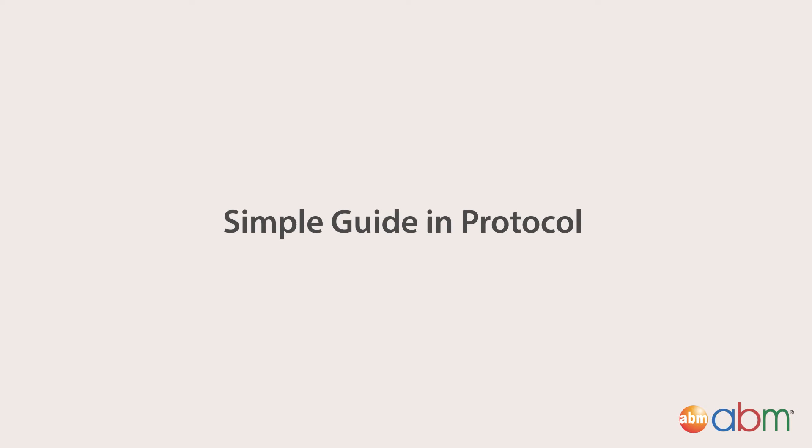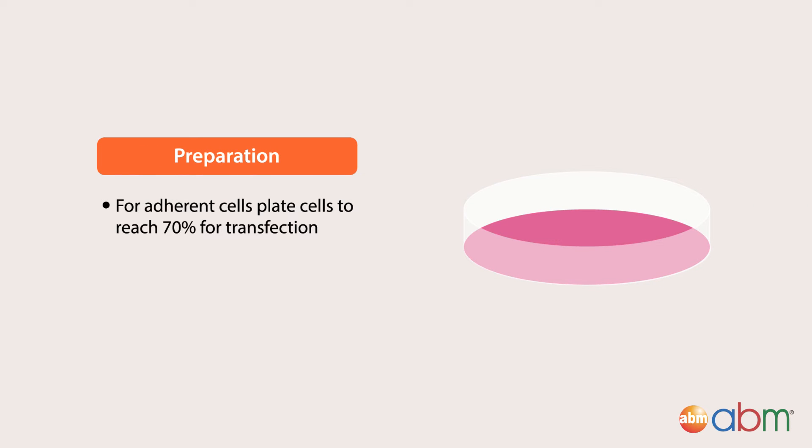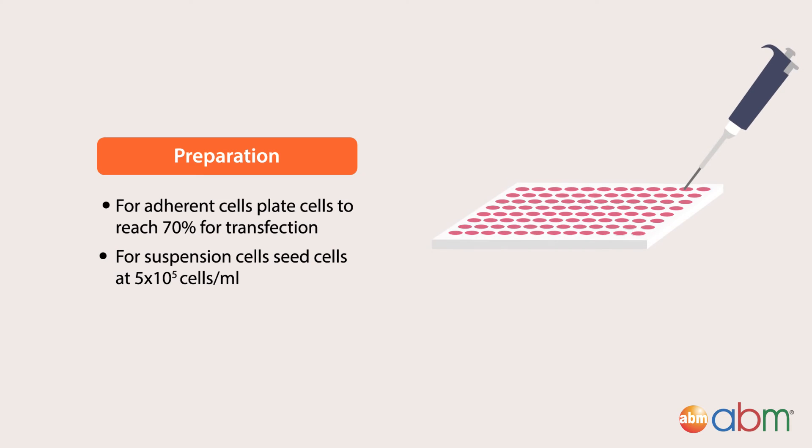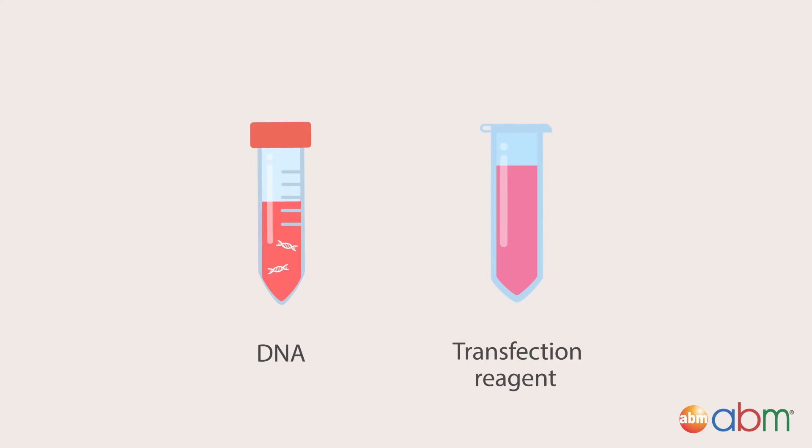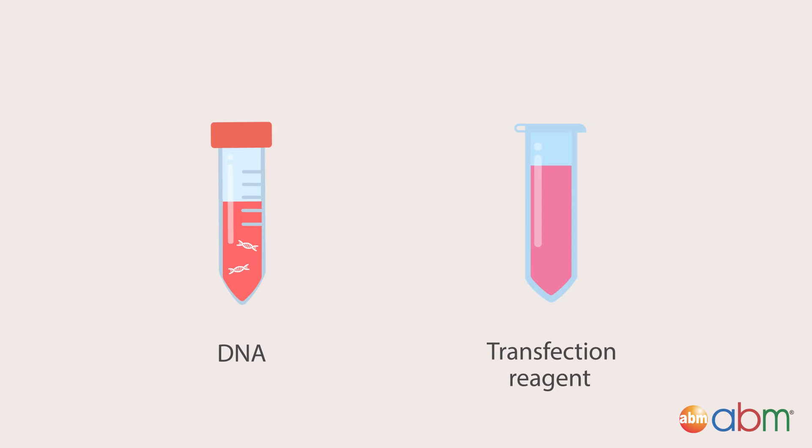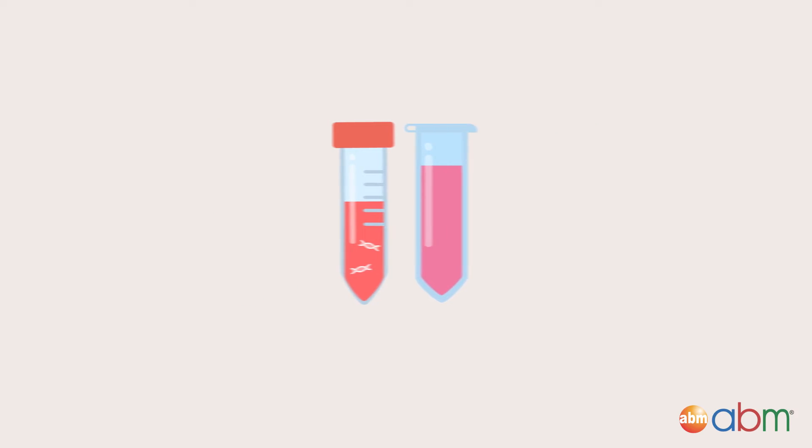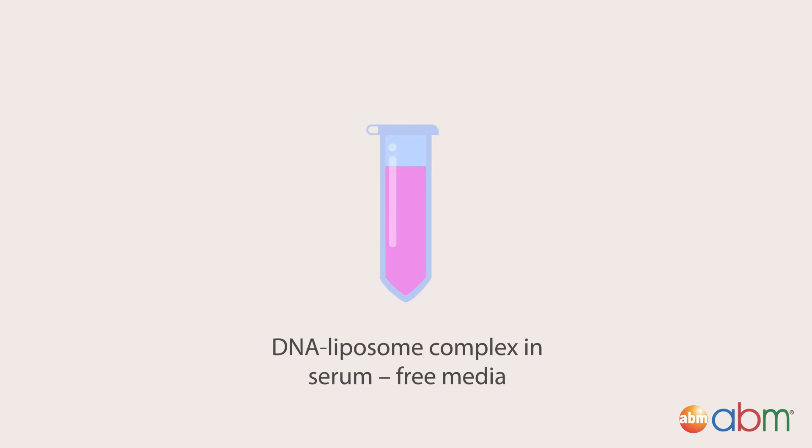Simple guiding protocol: for adherent cells, plate cells to reach 70% confluency for transfection. For suspension cells, seed cells at 500,000 cells per ml. Prepare the DNA and transfection reagent in separate tubes. DNA and transfection ratios should be optimized for your cell type—try 1:3 or 1:5 ratio to start. Combine the DNA and transfection reagent to create the DNA-liposome complex in serum-free media.